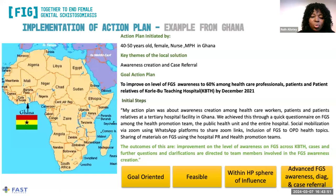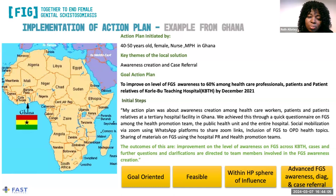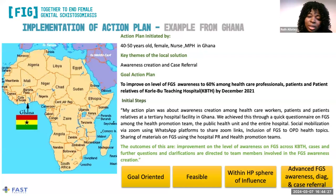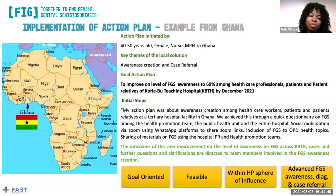If you drive about three kilometers away from the hospital, you will find a water source. Even though it's in an urban area, Korle-Bu is a referral facility — it receives cases from all over the country and beyond. So it receives cases from places where FGS is endemic within the country and even outside Ghana. People who have lived in rural areas and migrated to urban areas visit Korle-Bu Teaching Hospital when they have symptoms of female genital schistosomiasis. These are some of the things that made it perfect to undertake this action plan within the hospital.